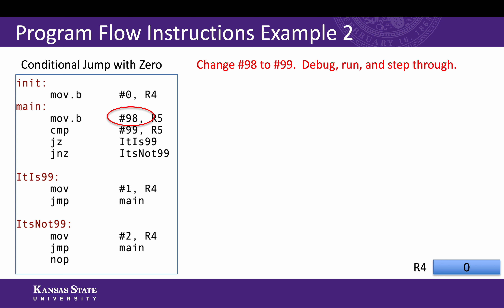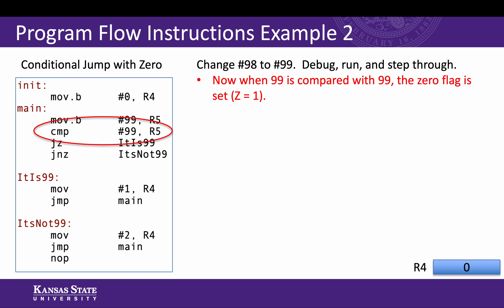Now let's suppose we changed the number 98 to the number 99. Let's debug it, run it, and step through the program. When 99 is compared with 99, the zero flag is set. The compare operation is subtracting the two items in the operand — 99 minus 99 — so the ALU sets the Z flag: Z equals 1, zero result.